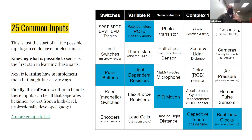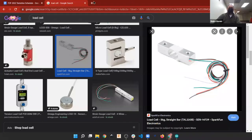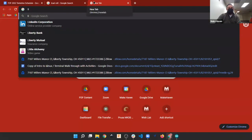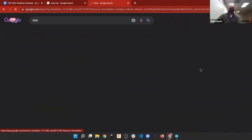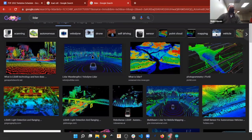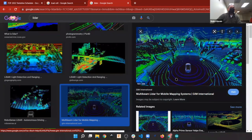You can get ethanol and CO2 gas sensors online pretty cheaply — you could even build your own breathalyzer. LiDAR is a fun technology. The high-end version is used on autonomous vehicles where it scans everything around the car, but if you search 'LiDAR Arduino' there are LiDAR modules you can get for around $60 — essentially the same type of sensor as on top of autonomous vehicles, just without the spinning mechanism.